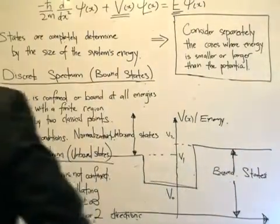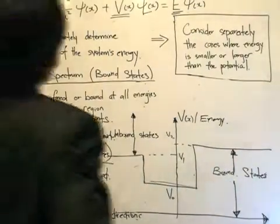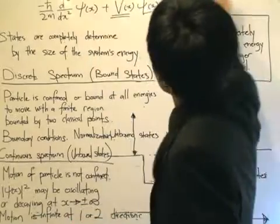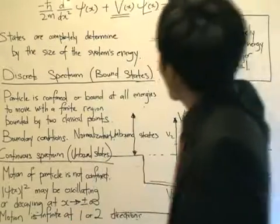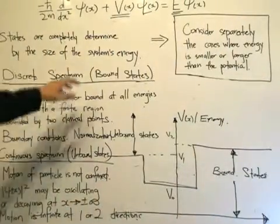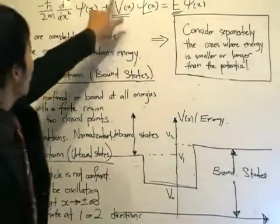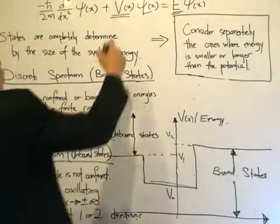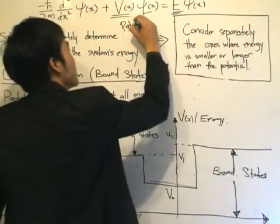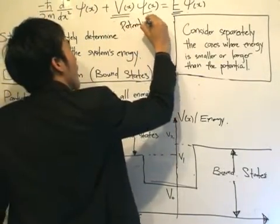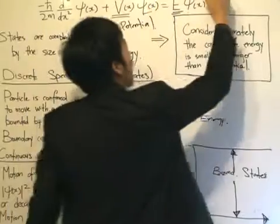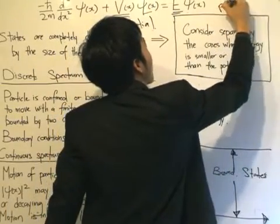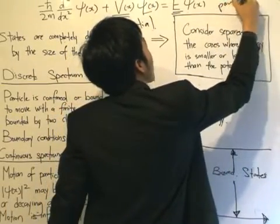Where we left off, we talked about solving the time-independent Schrödinger equation, which is given by this equation over here — the second-order time-independent equation. This quantity V in terms of X is what we call the potential. And this E is the energy of the particle.